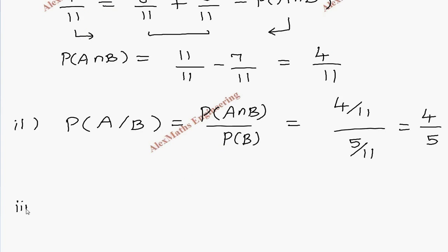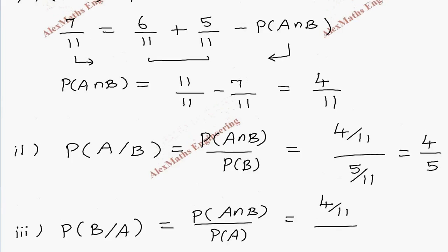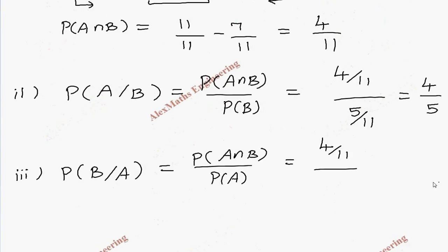In the third subdivision, they want P(B|A). The formula is P(B|A) = P(A∩B) / P(A). The numerator is P(A∩B) = 4/11 and P(A) = 6/11. After cancelling, we get 4/6, which simplifies by dividing by 2 to give 2/3.